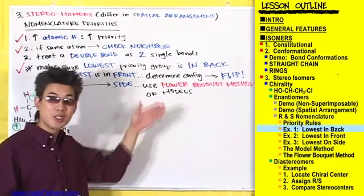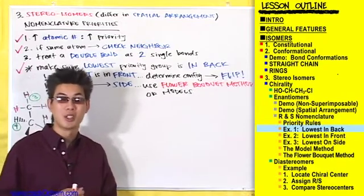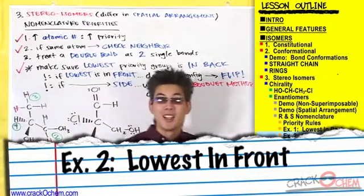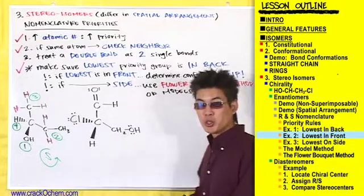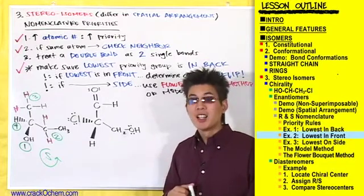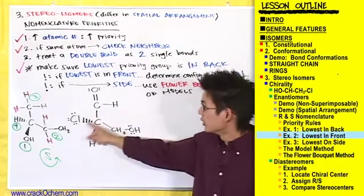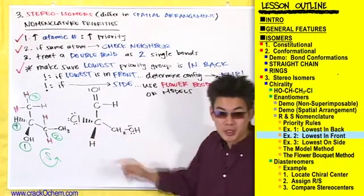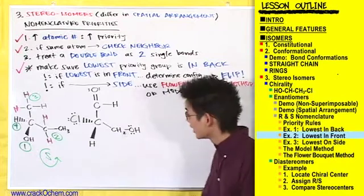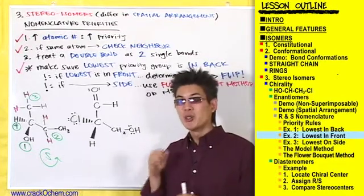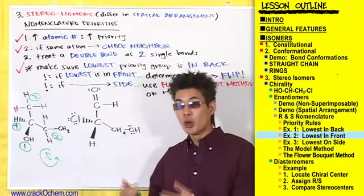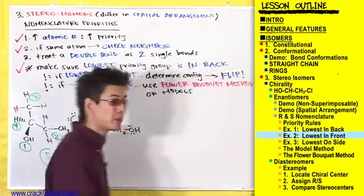Let's look at another example to see more of how the R and S priority system works. Your professor can ask you to assign R or S configurations to this compound. First, check: is it chiral? Yes — it has four different substituents on the central carbon. Now let's number them from one to four. The first thing that should jump out is the hydrogen, which automatically gets priority four since it's the lowest atom on the periodic table.